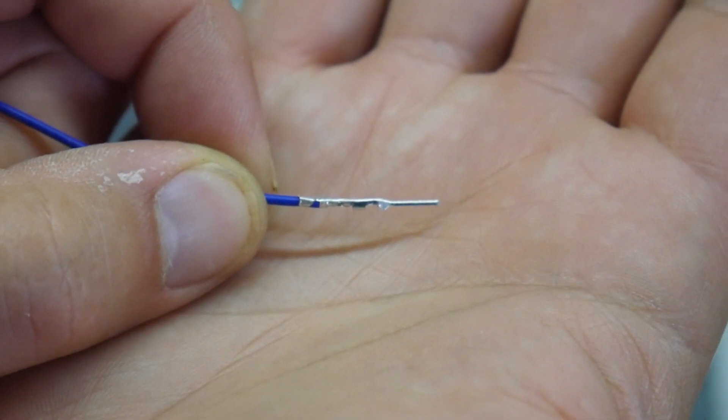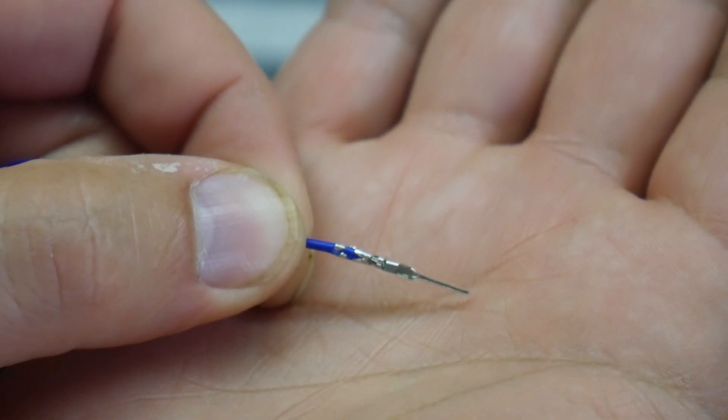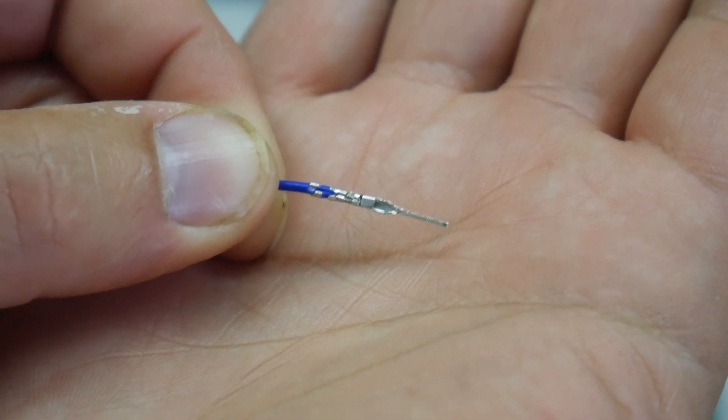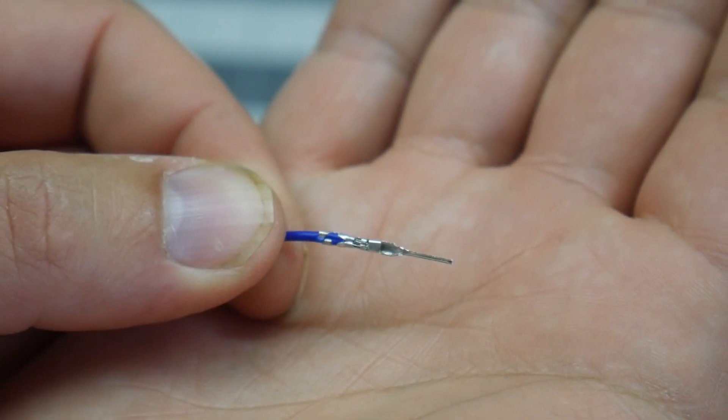Also notice it is still very straight. If you bend these, it might be hard to get it back into the housing of your connector, but this is what it should look like. And that's how you add a DuPont or JST connector to your wires.